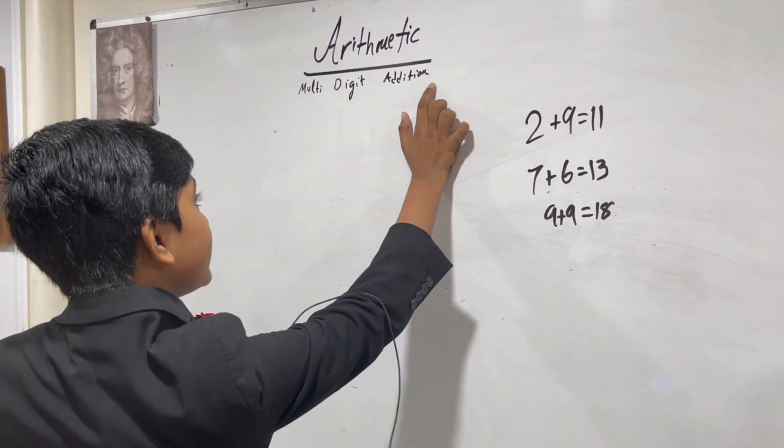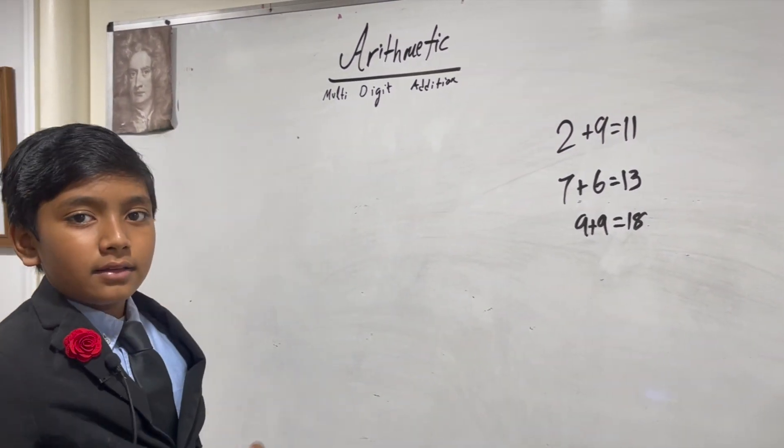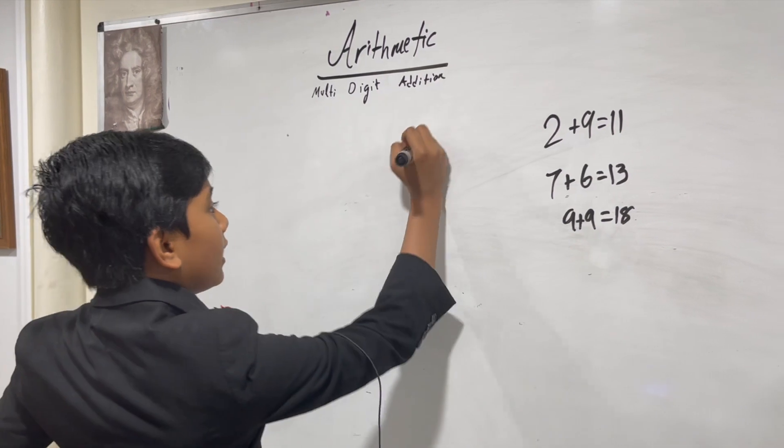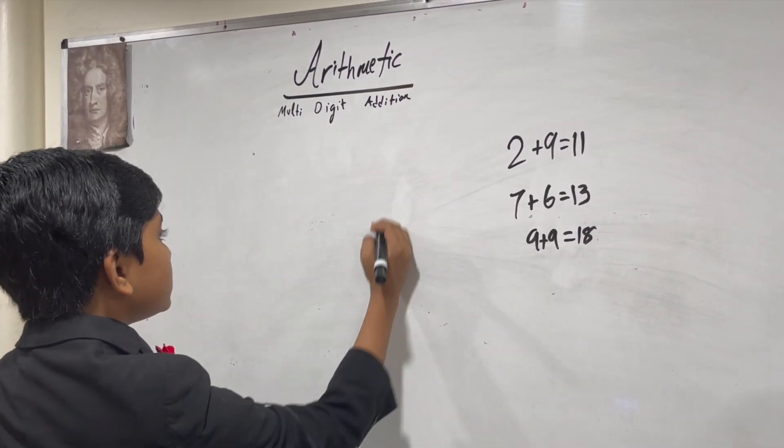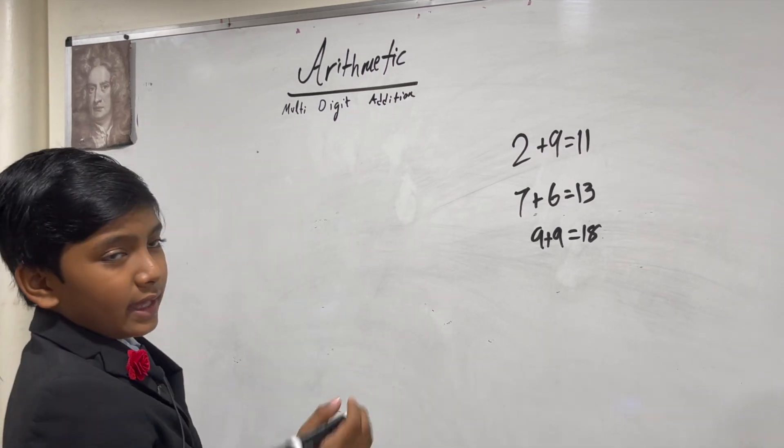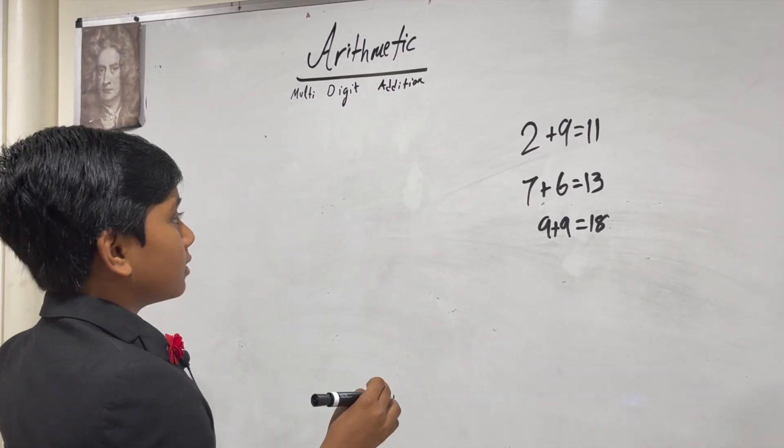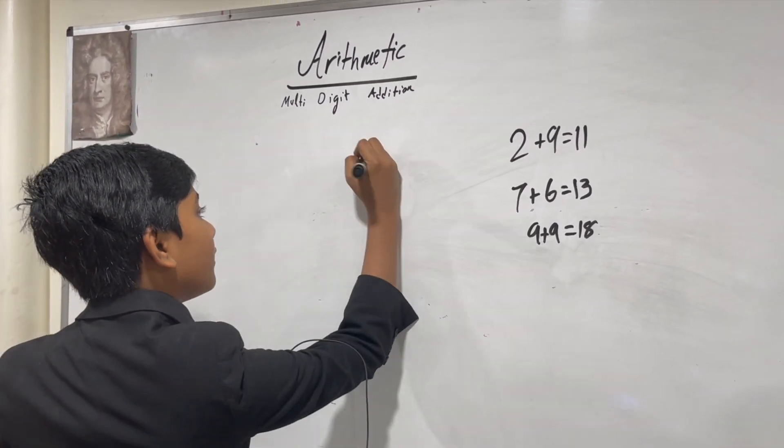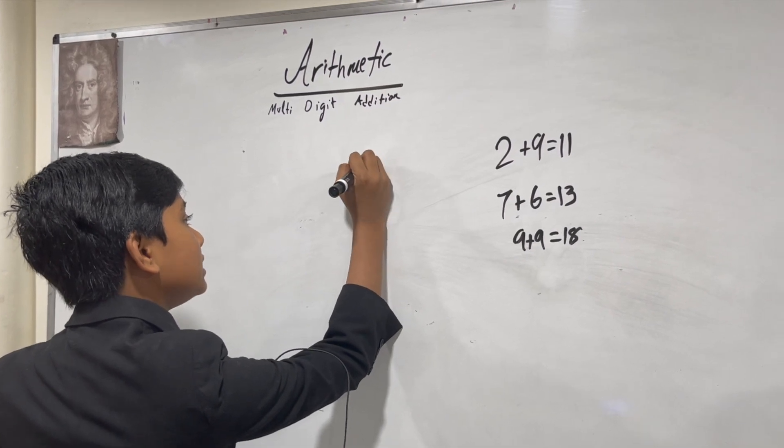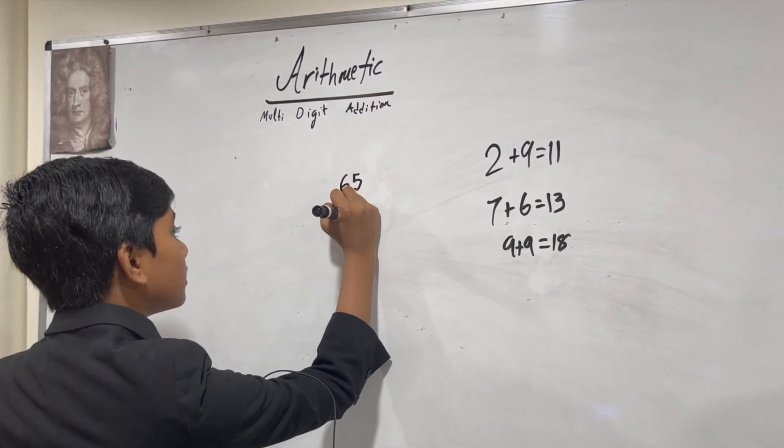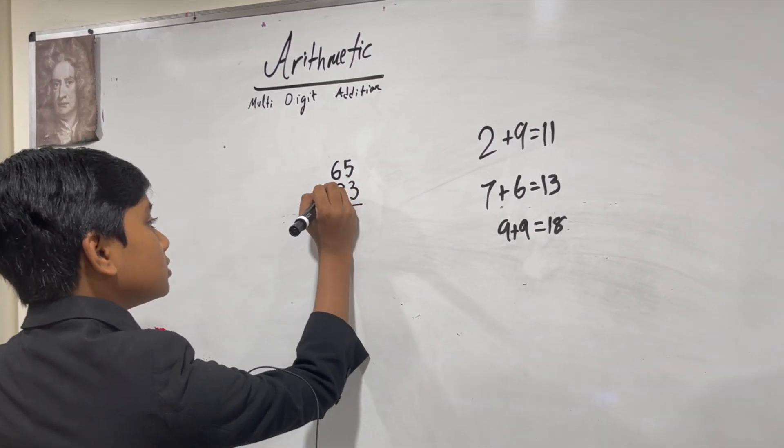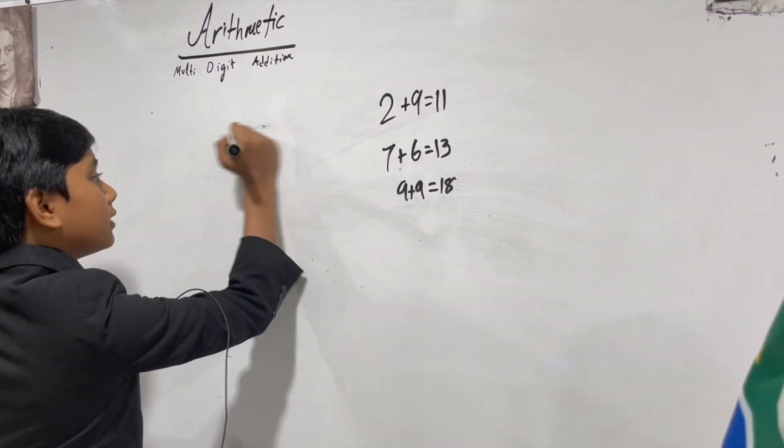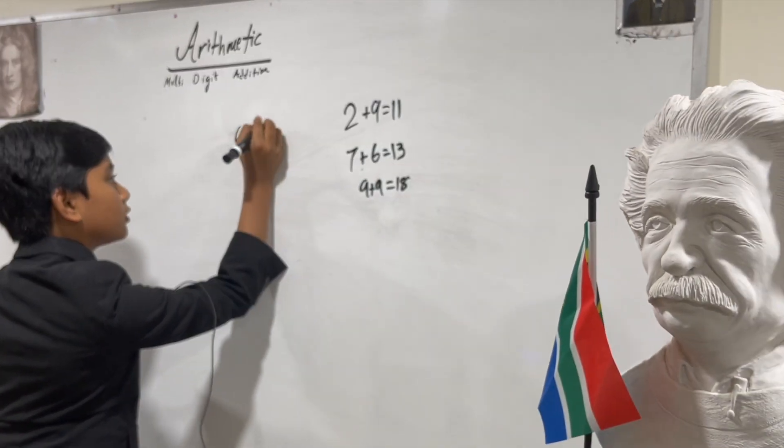Because multi-digit addition deals with adding numbers that have multiple digits. So let's start with this example and it's going to be pretty easy. Let's say we have the numbers 65 and 33. So let's add 65 and 33.